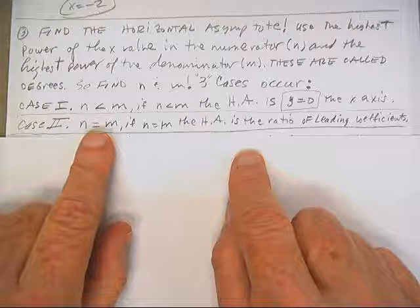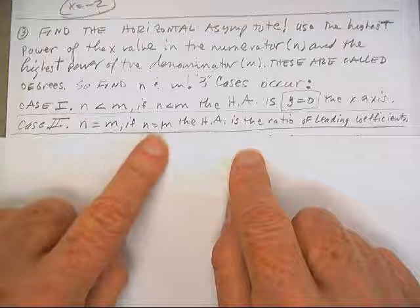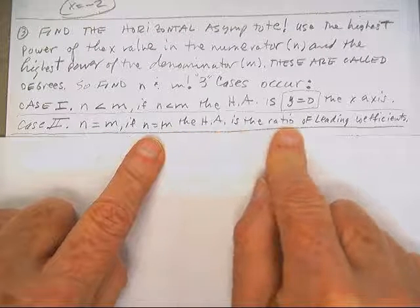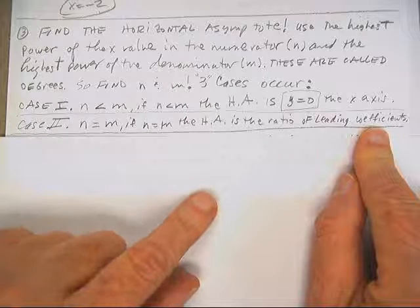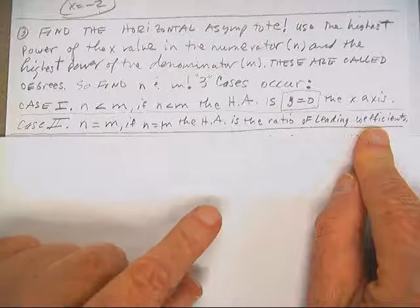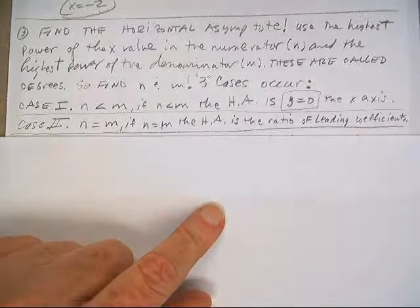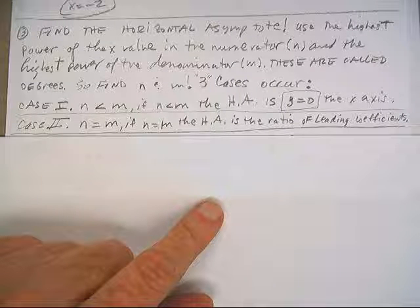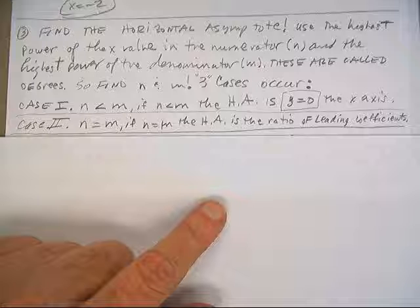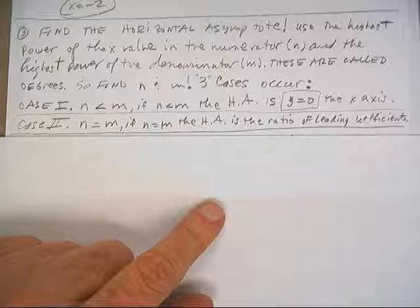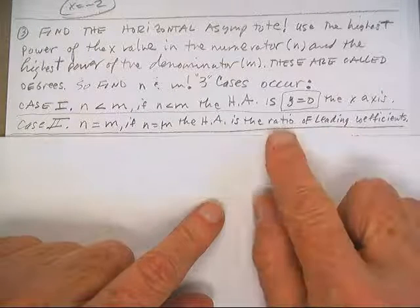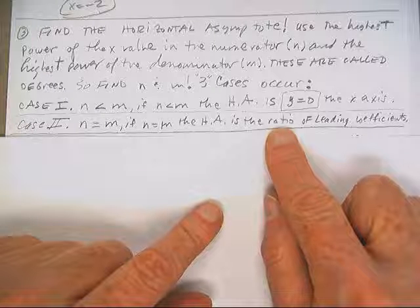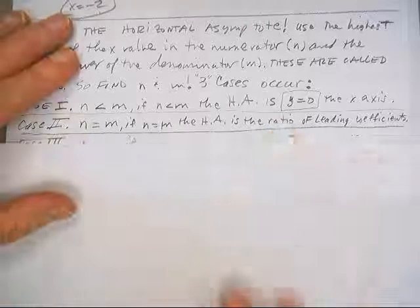n and m are equal, and if that's true, then the horizontal asymptote is the ratio of leading coefficients. So the leading coefficient is the number that's in front of the biggest power. So it could be any number. If you had 3x squared, the leading coefficient would be 3. If it's just x squared, the leading coefficient would be 1. And a ratio is you make a fraction out of the leading coefficients, whatever they are. That's case two.